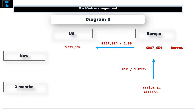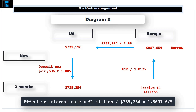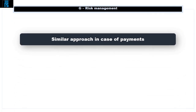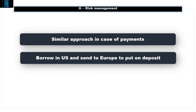To get a comparable dollar amount for our receipt in 3 months time, we assume the US dollars are put on deposit in the US, earning 2% per annum or 0.5% for the 3 month period. We therefore end up with $735,254 in 3 months time. This means we have achieved an effective exchange rate of 1,000,000 euros divided by $735,254, or 1.3601 euros to the dollar. A similar approach can be used to hedge payments to an overseas supplier — the only difference is that money would be borrowed in the US and sent to Europe to put on deposit, with that deposit then used to pay the European supplier in 3 months time.